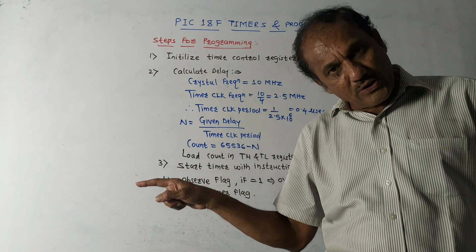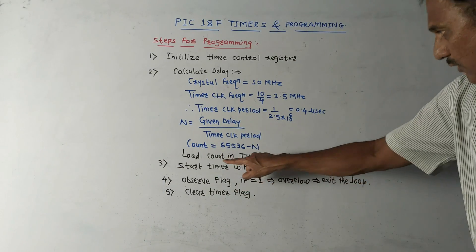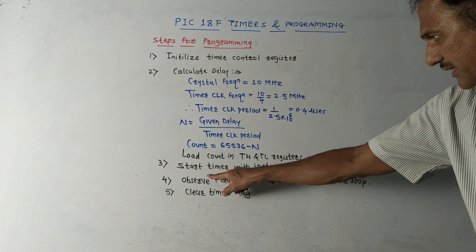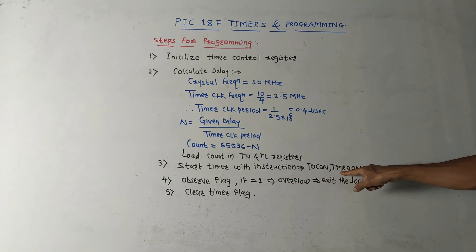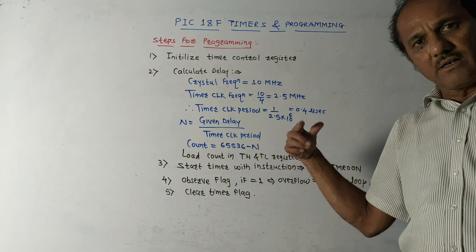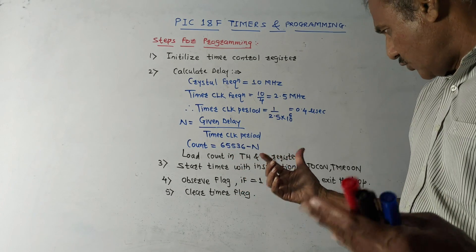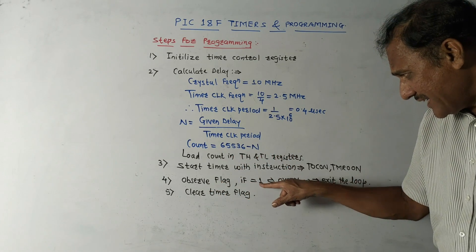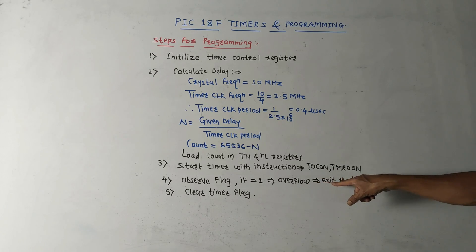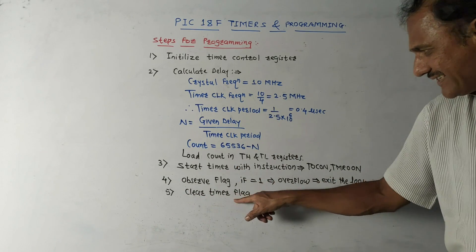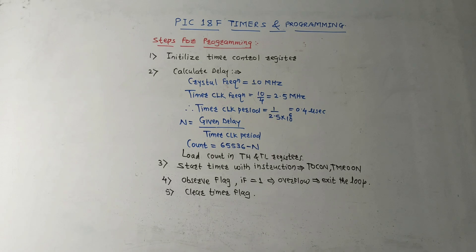For example if the given delay is 10 milliseconds, divide that by the timer clock period to get the value of N. Then calculate count = 65536 minus N. Once you have this count value, convert it into hexadecimal and load it into the TH and TL registers, similar to 8051. Third step: start the timer with the instruction T0CON and TMR0ON. Then observe the flag using a loop for the delay routine - if the flag is 1 it indicates overflow and you exit the loop. After exiting, clear the timer flag.